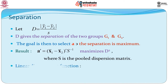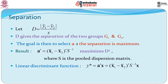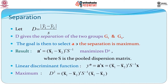The linear discriminant function y* came out to be a'x. With the choice of a as (x1-bar − x2-bar)' S⁻¹ multiplied by x, we get the corresponding linear discriminant function y*. The maximum value that d² achieves is (x1-bar − x2-bar)' S⁻¹ (x1-bar − x2-bar). This is referred to as Fisher's linear discriminant function.